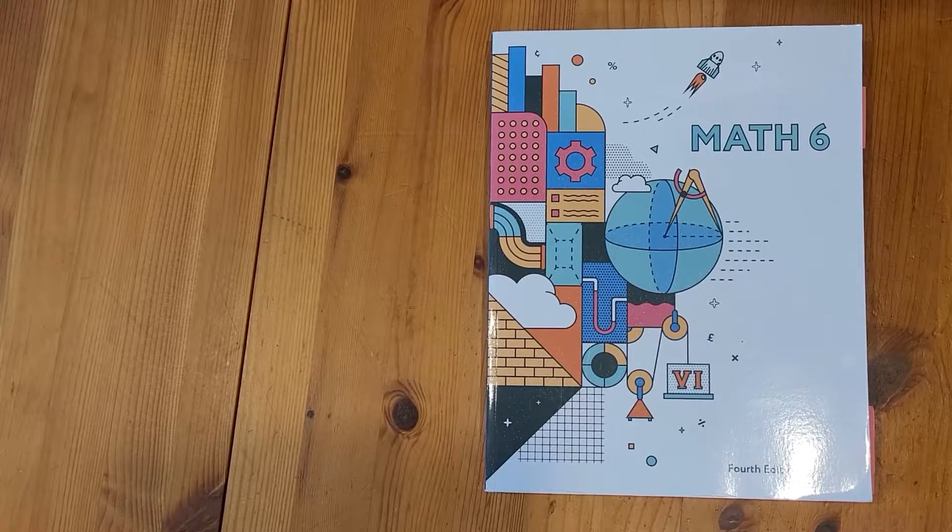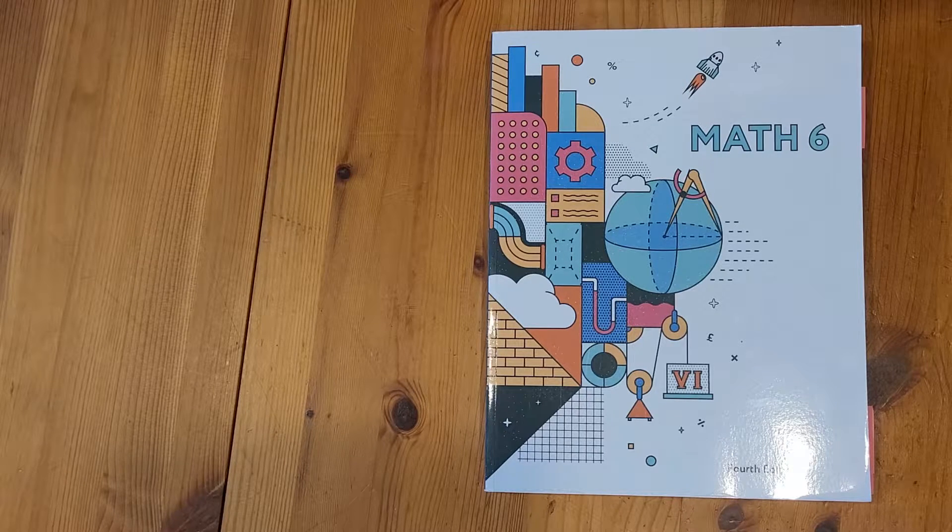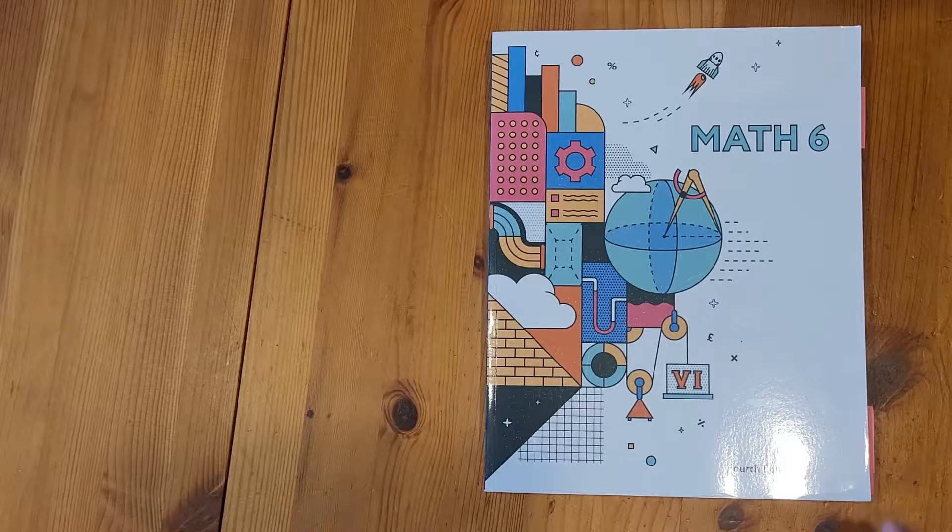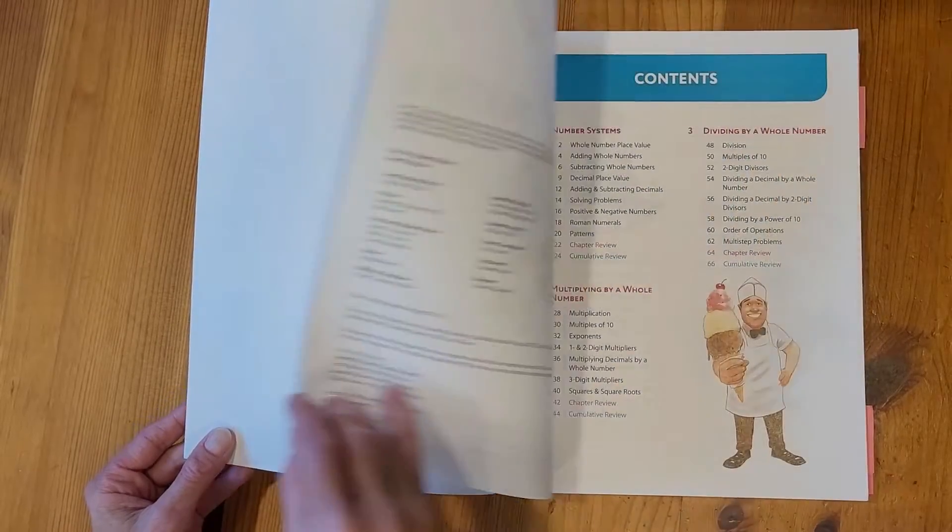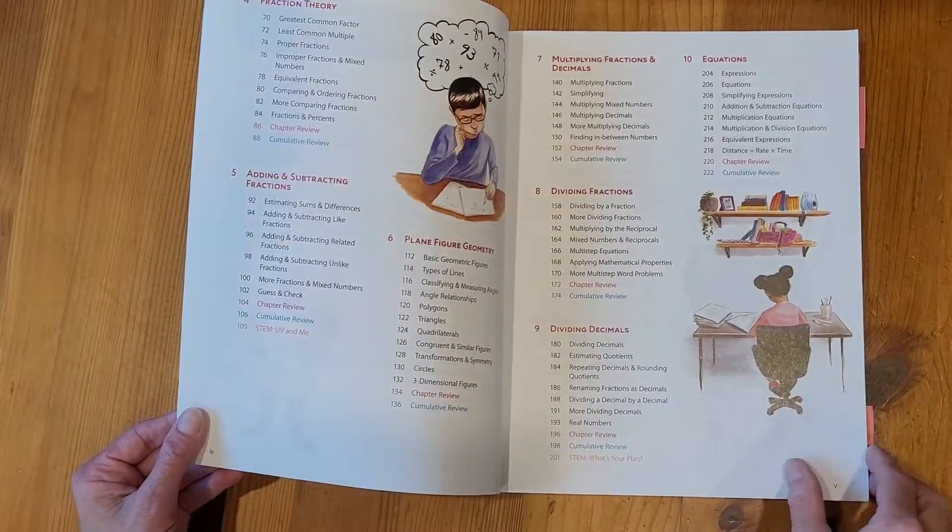This is the Math 6 Student Edition book. Now this book is a textbook and not a workbook. So students are going to want separate sheets of paper to be able to show their work and complete the problems. This book starts out with the table of contents, just to give an overview of the entire book.